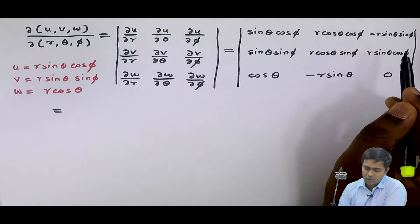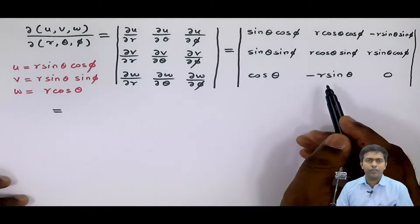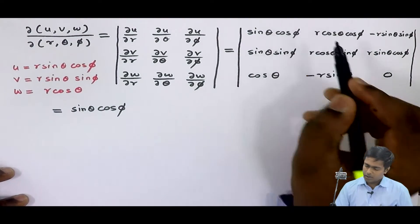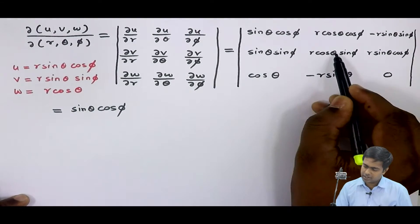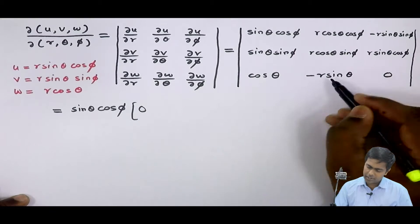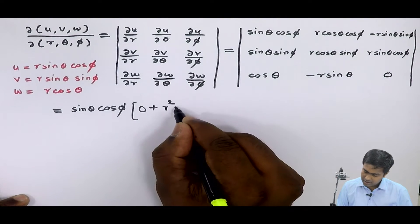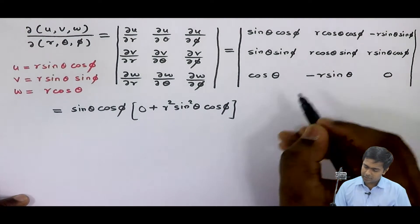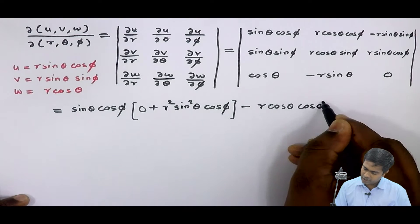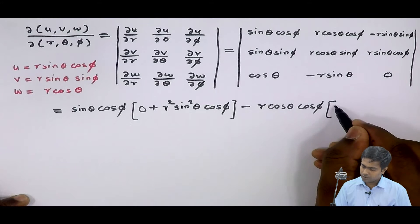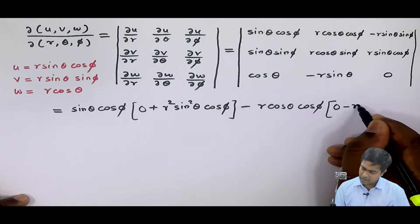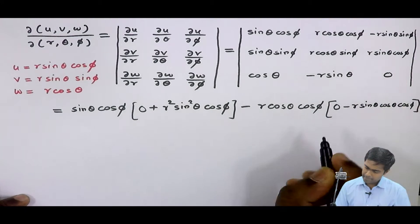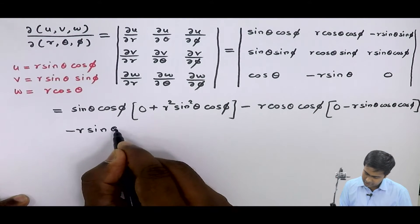These are the values of the nine terms. Now let's find the value of the determinant. Therefore it is sine theta cos phi into the determinant of this 2x2 matrix. This multiplication gives plus r² sine² theta cos phi. Next, the term minus r cos theta cos phi gives minus r sin theta cos theta cos phi, and the last term is minus r sin theta sin phi.